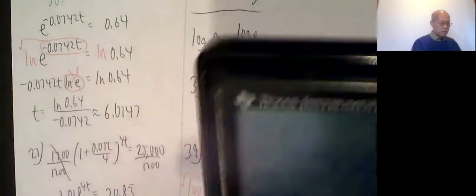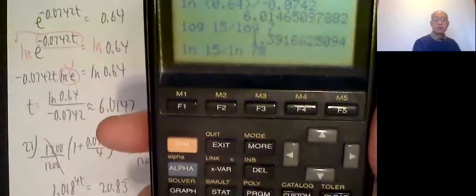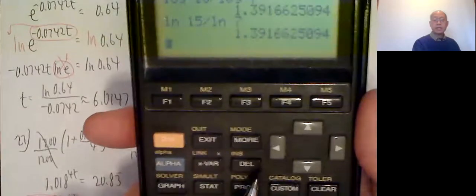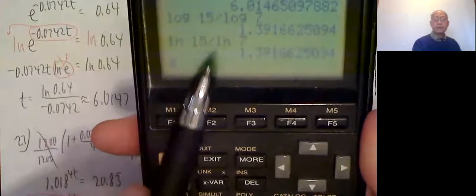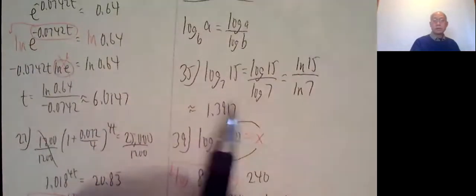Let me show you ln 15 divided by ln 7. Every digit is exactly the same. So log 15 divided by log 7 or ln 15 over ln 7. They're identical. So here we go.